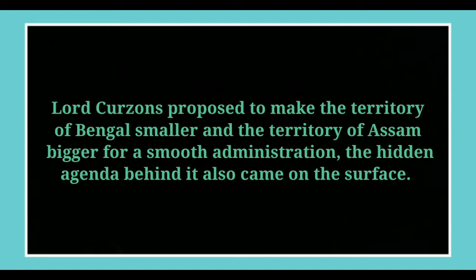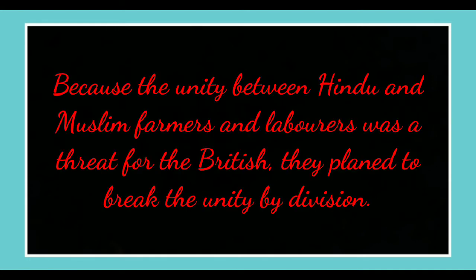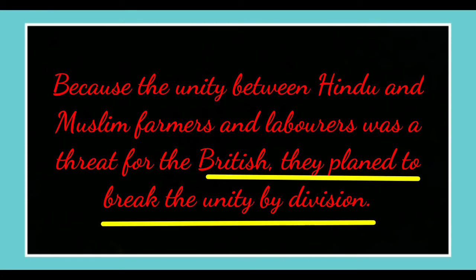Lord Curzon proposed to make the territory of Bengal smaller and the territory of Assam bigger for a smooth administration. However, the hidden agenda behind it also came to the surface. The British planned to break the unity between Hindu and Muslim farmers and labourers, because that unity was a threat to the British.